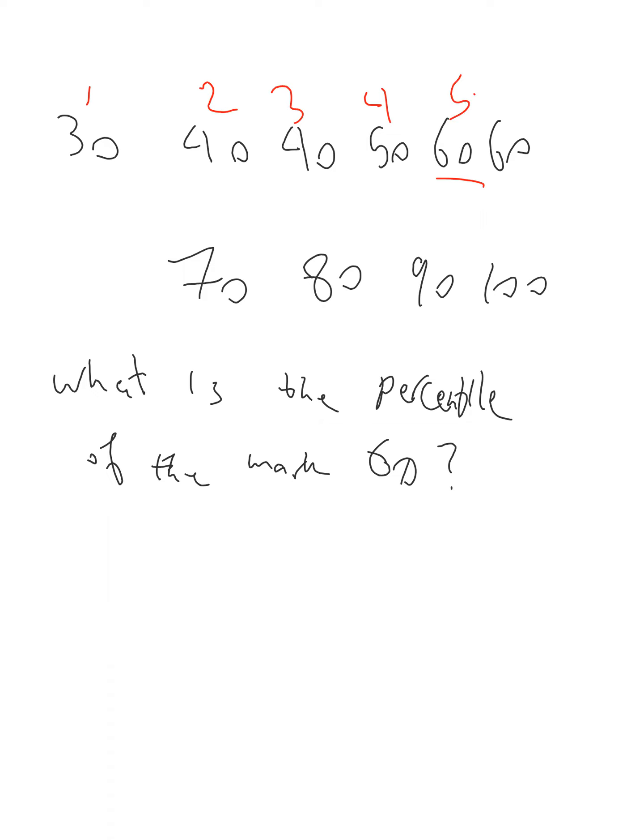So we can say that the rank of it is 5. So now the question is how much is, if we remember the formula for that, P equals 100 times L plus half E over N. So L is the number of data set less than the data point of interest.